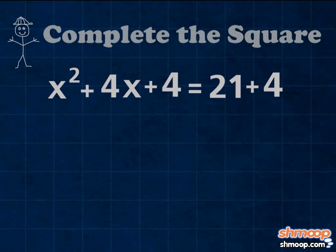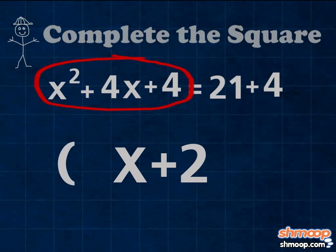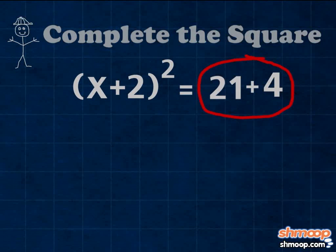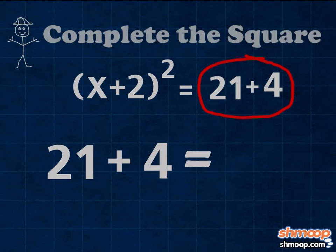Now we can factor the left side of the equation. x squared plus 4x plus 4 can be simplified to x plus 2 in parentheses squared. To simplify the right-hand side, we add 21 and 4 to get 25.